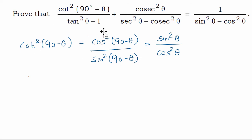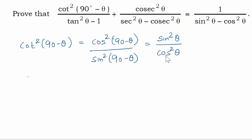Next, what is cos 90 minus theta? From the textbook definition, we know that cos 90 minus theta is sin theta. So cos square 90 minus theta is sin square theta. Similarly, sin 90 minus theta is cos theta, so sin square 90 minus theta will be cos square theta.